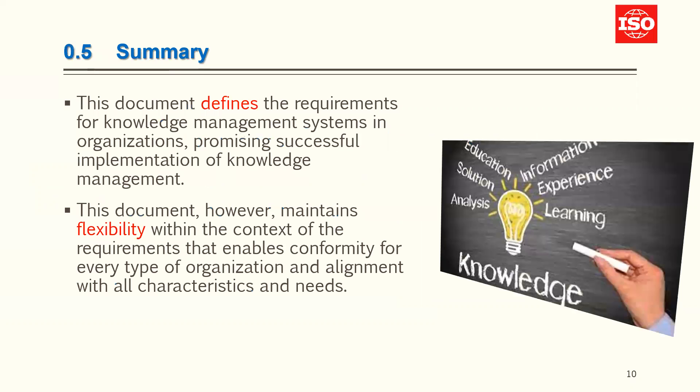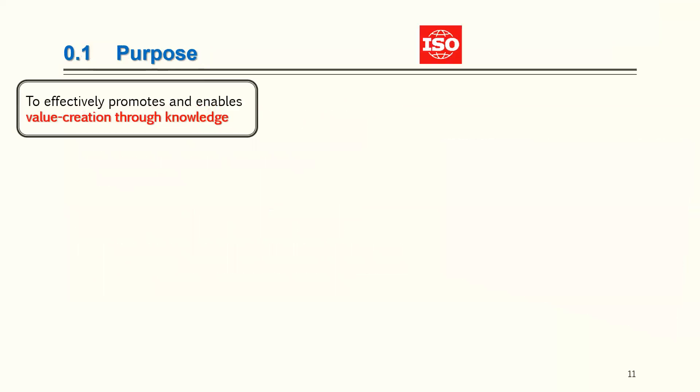Clause 0.5 simply concludes why ISO 30401 is useful. This standard defines the basic requirements for organizations willing to implement a successful and effective knowledge management system. Like all similar management systems standards, it is generic so that it could be suitable for any organization regardless of its type or size, maintaining flexibility within the context of requirements to enable conformity for every type of organization.